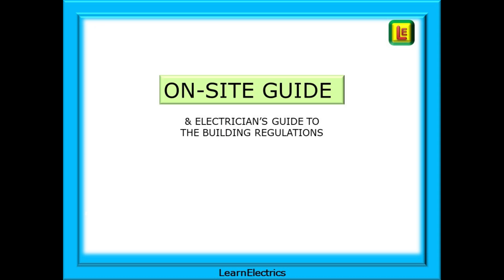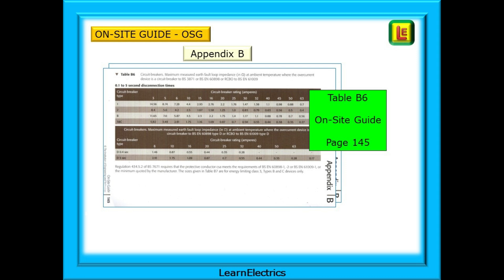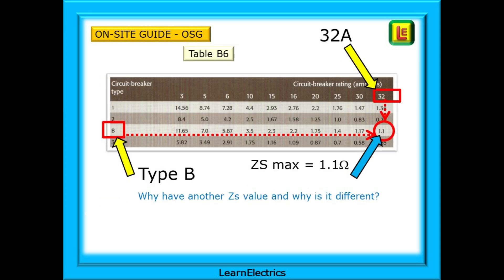Now we can look at the on-site guide and the ZS values are the same numbers as in the electrician's guide to the building regulations. Look at appendix B of the on-site guide. And on page 145 we have table B6 as shown here. We are staying with our 32 amp type B circuit breaker so find type B on the left shown in the red box and travel along the row until you come to the column ZS maximum.